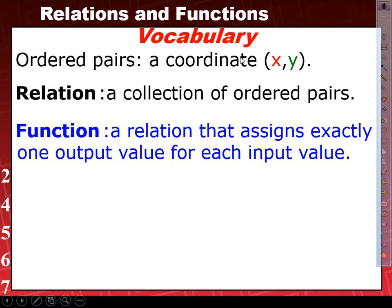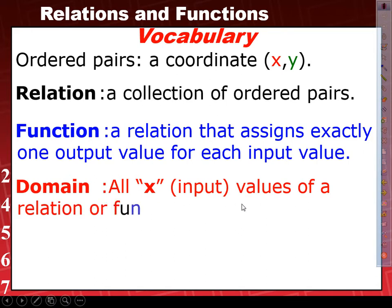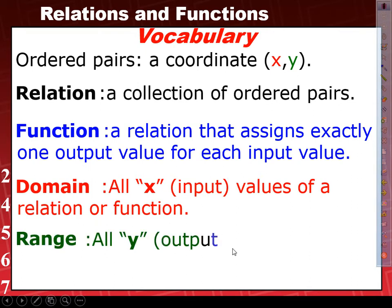I wrote the X in red and the Y in green on the ordered pair. Because the X values of any relation are known as the domain — all X values of a relation or function. With that same idea, the range is all Y values of the relation or function.